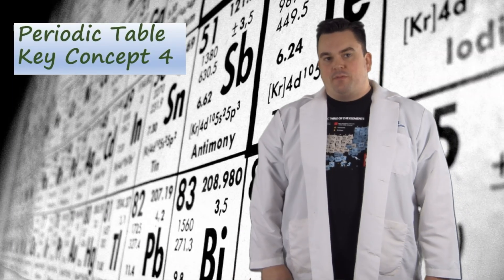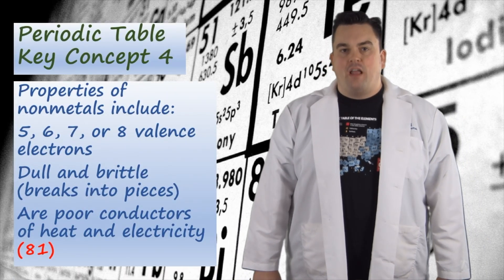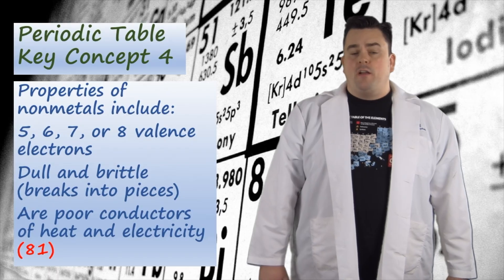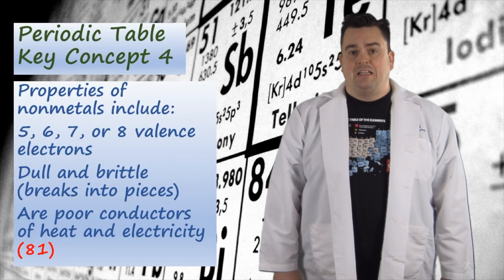Periodic Table Key Concept 4. Properties of nonmetals include five, six, seven, or eight valence electrons. They're dull and brittle. They tend to break into pieces. They're also poor conductors of heat and electricity.